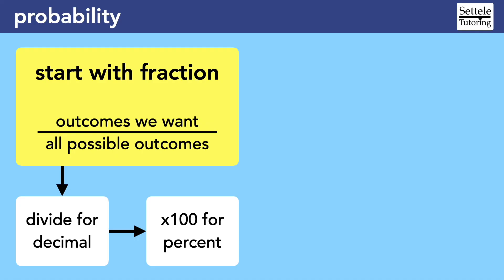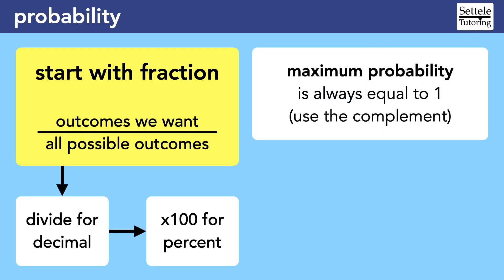Remember that the maximum probability for any situation will always be 1, and if it's difficult to find the probability that you're looking for, it might be easier to use the complement to find the probability of your outcome not happening, then subtract that number from 1.